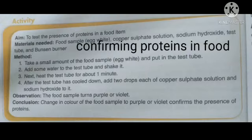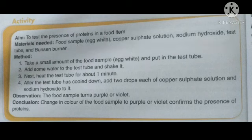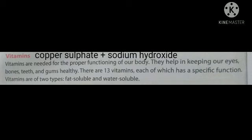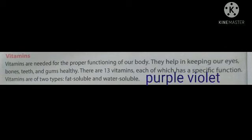Now we are going to test the presence of proteins in a food item. The materials required would be food sample such as egg white, copper sulphate solution, sodium hydroxide solution, test tube and Bunsen burner. The method requires taking a small amount of egg white and putting it in the test tube, adding some water and mixing it, heating the test tube for about a minute, and after it cools down, adding two drops each of copper sulphate solution and sodium hydroxide. The food sample will turn purple or violet, confirming the presence of proteins.